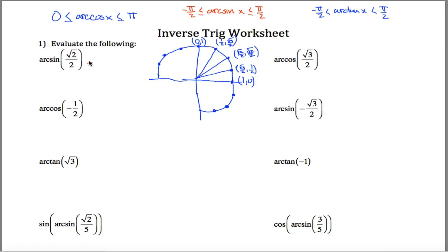The first one asks me: what's the arc sine of root 2 over 2? So what it's asking me is what angle has a sine of root 2 over 2? So the y coordinate on my unit circle — when is it root 2 over 2? It looks like right here, but also right here. However, my answer is this one because this is the only point on my unit circle that is between negative pi over 2 and pi over 2, so the angle that got me there would be pi over 4.